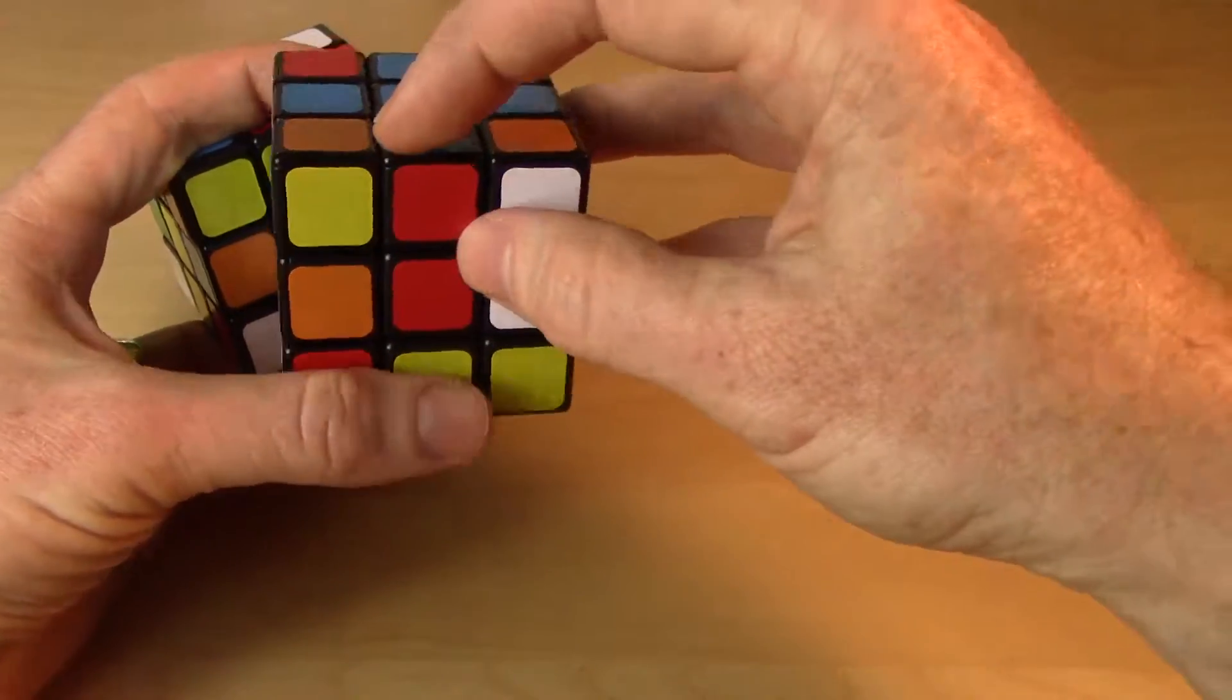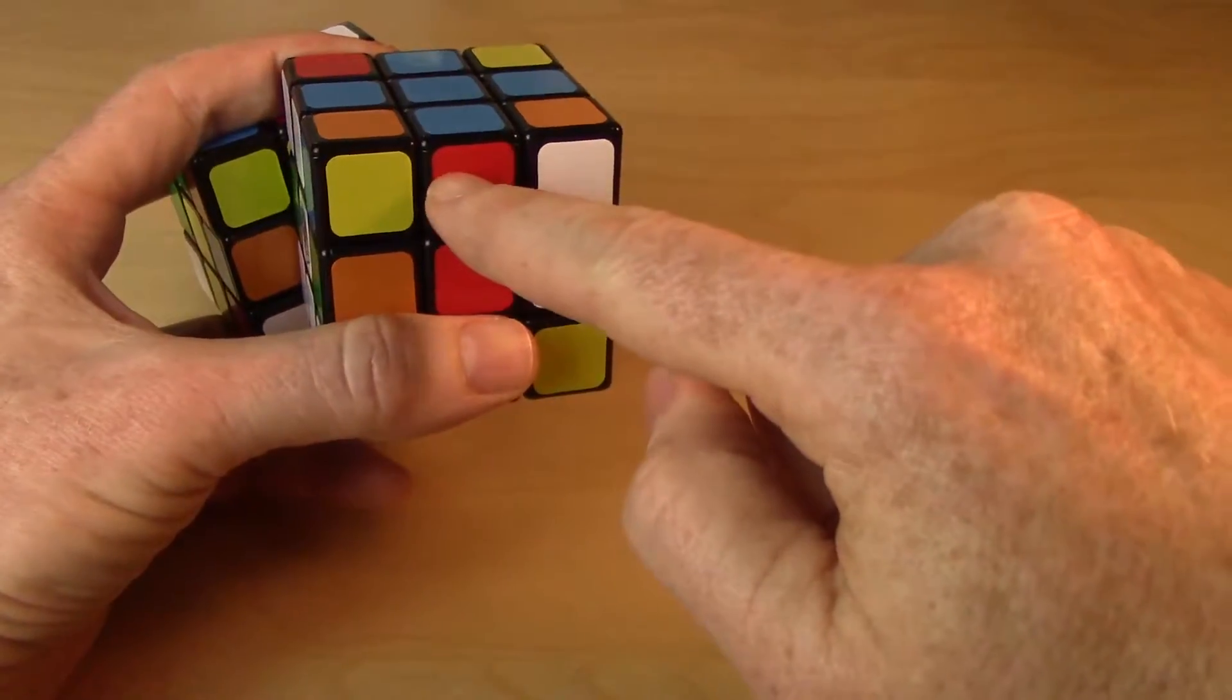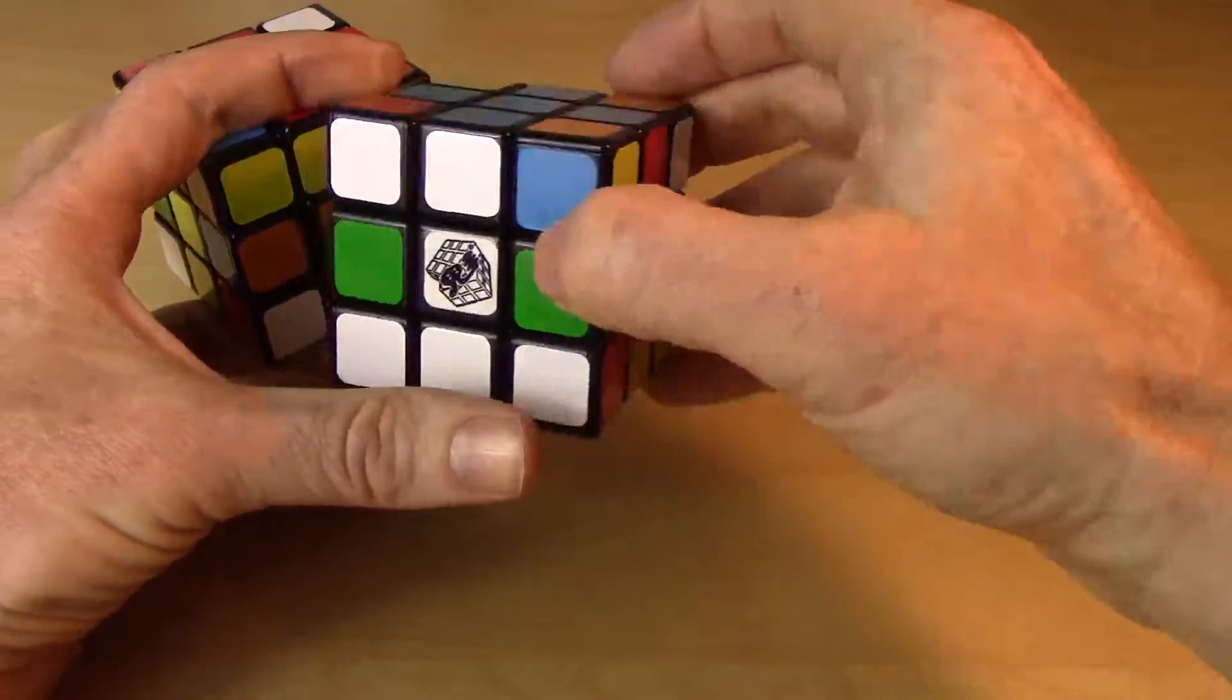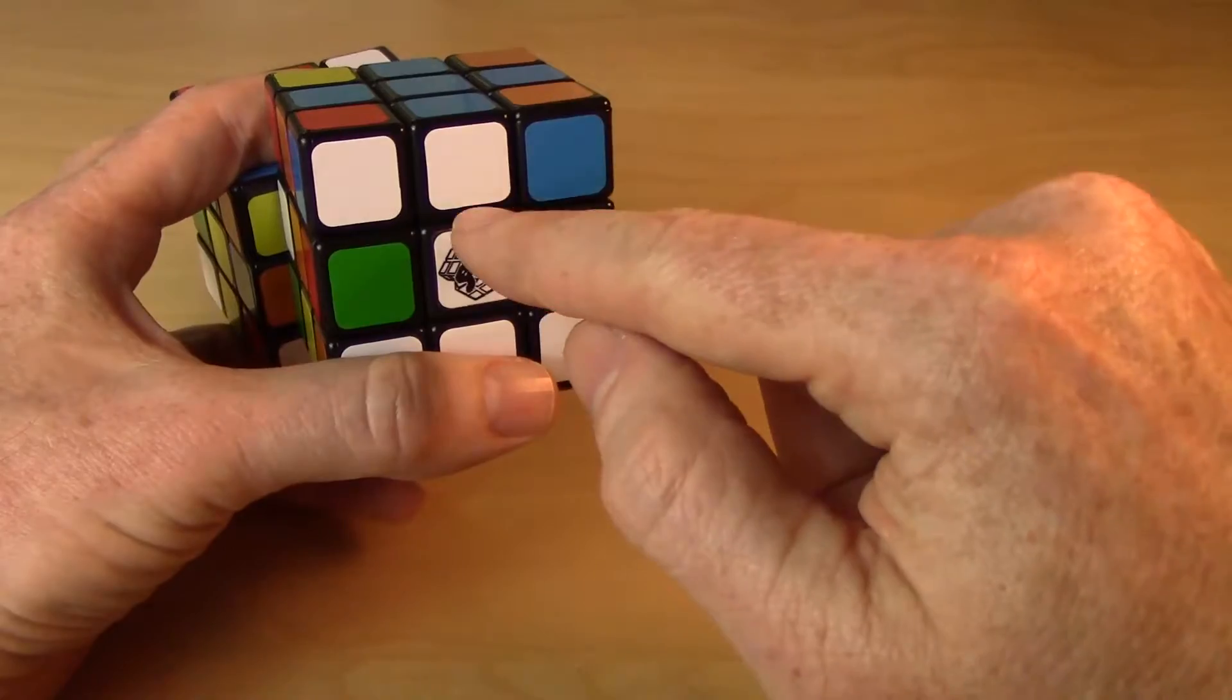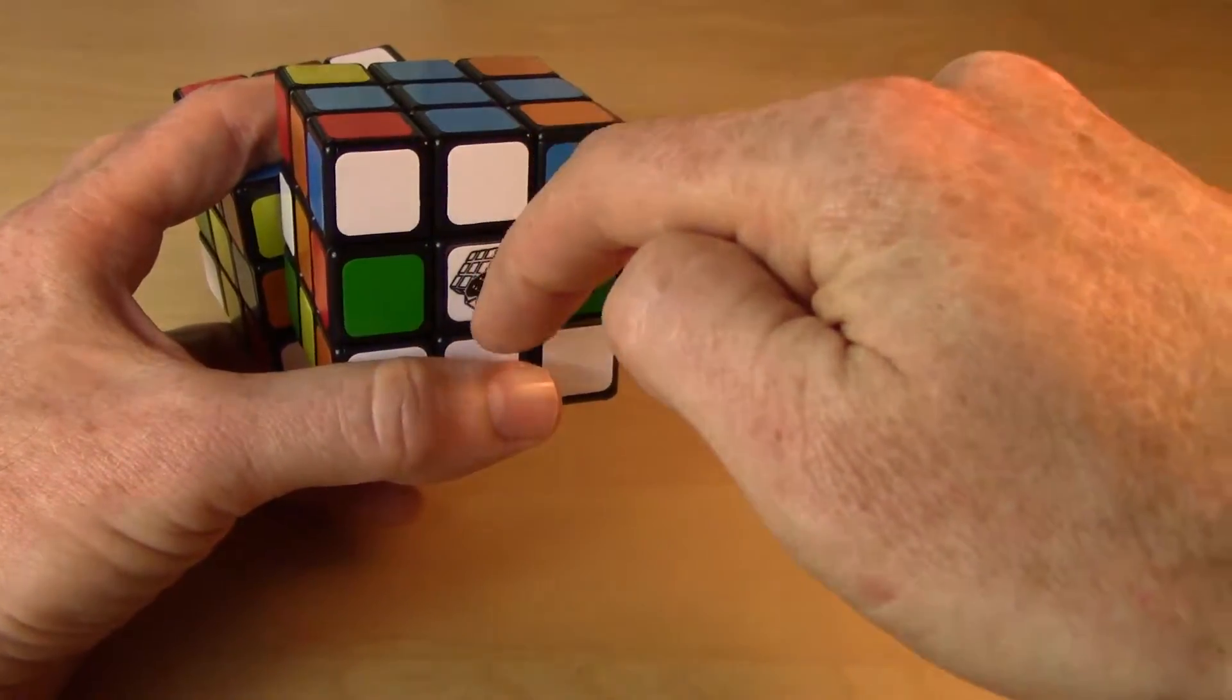By that I mean that the edge piece that has the blue sticker here better also have the red sticker on the side matching that red center sticker and so on. This one better be blue on top and white on the side to match. So this cross has to extend deeply through the middle layer.